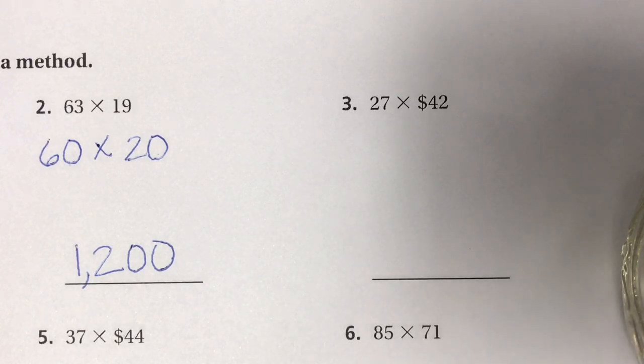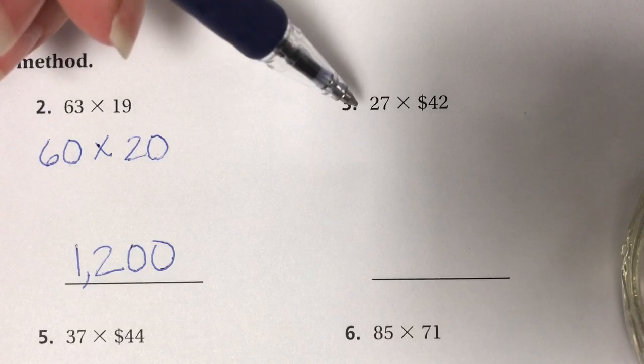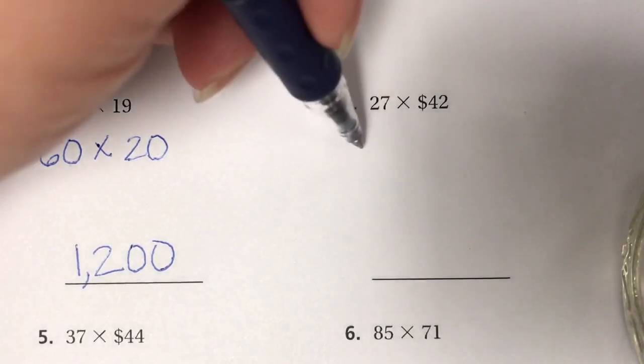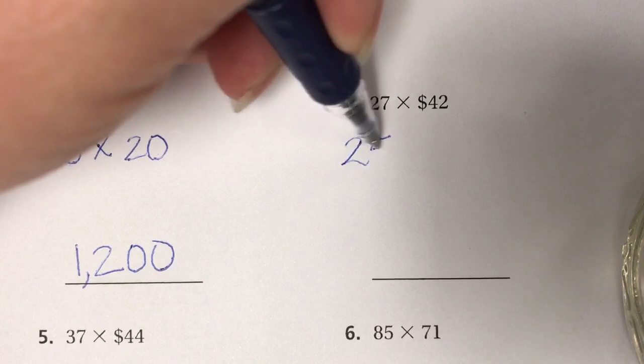Now I'm going to do number 3 using compatible numbers, which is something different we learned in class today. Compatible numbers are familiar numbers that we use every day, such as 15 or 25. I'm going to look at this number 27. I could use the compatible number 25.